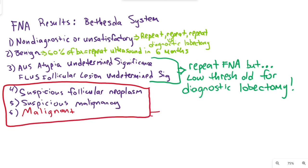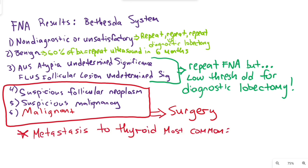Safe answers for four to six follicular neoplasm, suspicious for malignancy, and malignancy should be surgery. The most common tumor to metastasize to the thyroid is renal cell carcinoma.